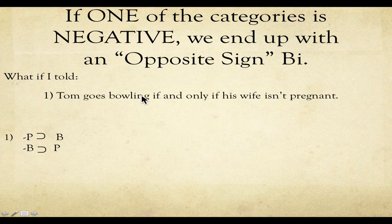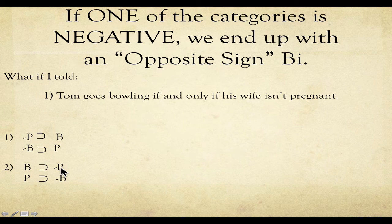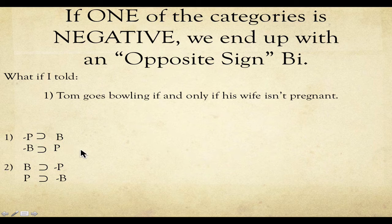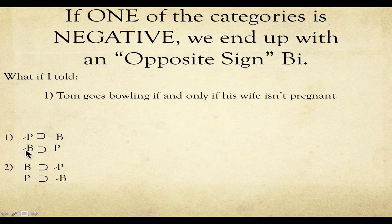If his wife's not pregnant, he goes bowling — contraposed: no bowling means she is pregnant. And also, if Tom goes bowling, then his wife is not pregnant. So: if bowling, then not pregnant. And we contrapose both of those. Now we have opposite signs on both sides of the horseshoe — a negative P with a positive B, and a negative B with a positive P.